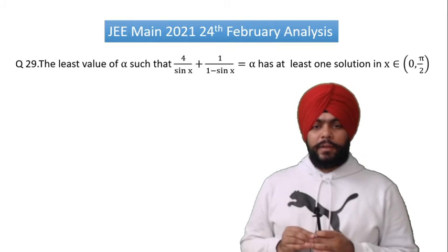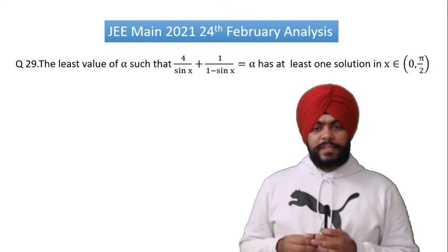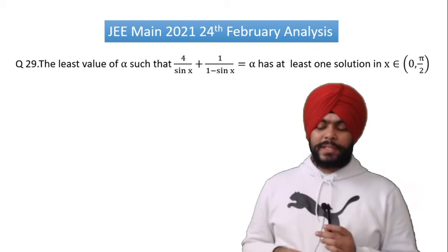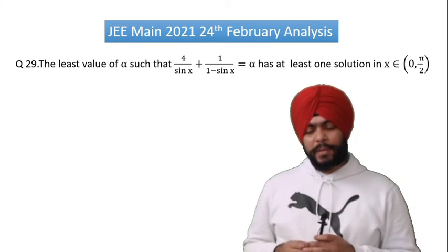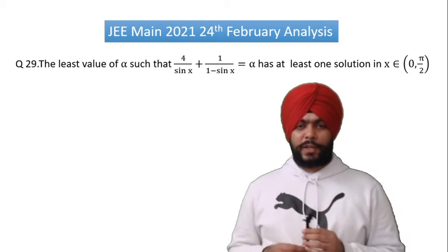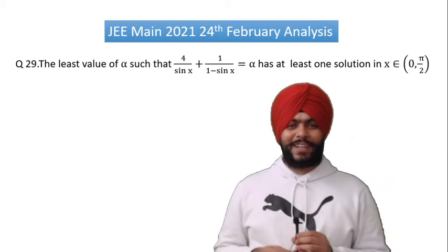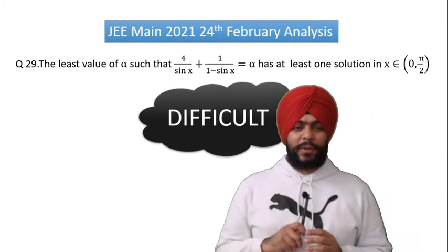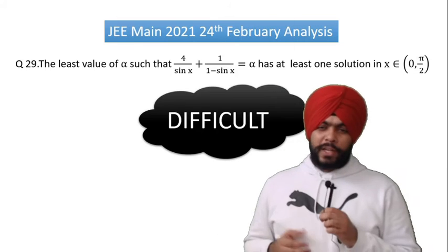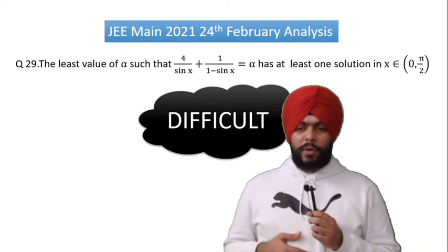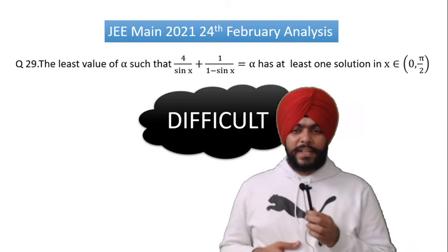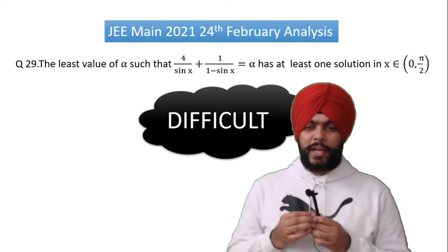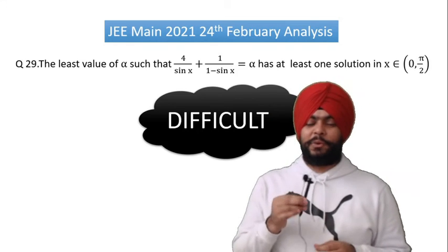Question number 29: find the least value of alpha such that — those who know this approach will find it medium level, but it requires a little time. It falls into the medium-to-difficult category. The question is range-based with trigonometry in the denominator.